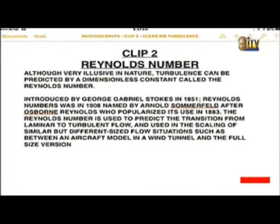Reynolds number — very important for viewers to understand. Although very elusive in nature, turbulence can be predicted by a dimensionless constant called the Reynolds number. Introduced by George Gabriel Stokes in 1851, it was named in 1908 by Arnold Sommerfeld after Osborne Reynolds, who popularized its use in 1883.